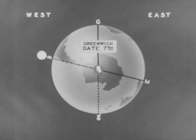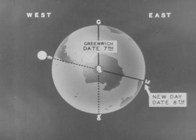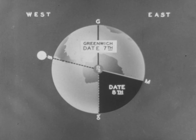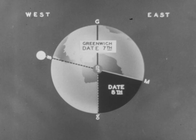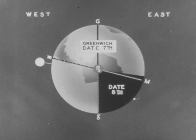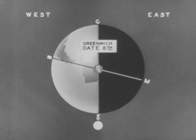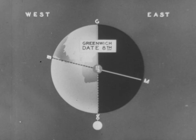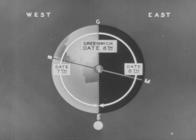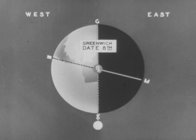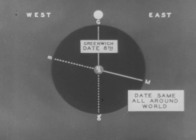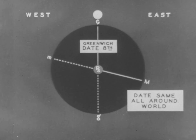As the sun transits at that meridian, the date changes and a new day begins. If we allow the black area to indicate the positions where the date has changed to the 8th, we can see that the date of all places in east longitude becomes the 8th before Greenwich. As the sun transits the lower branch of the Greenwich Meridian, it becomes the 8th at Greenwich, and all places in west longitude are behind Greenwich in date. As the sun again reaches Greenwich, we can see that the date is the 8th, and once more it is the same all around the world.